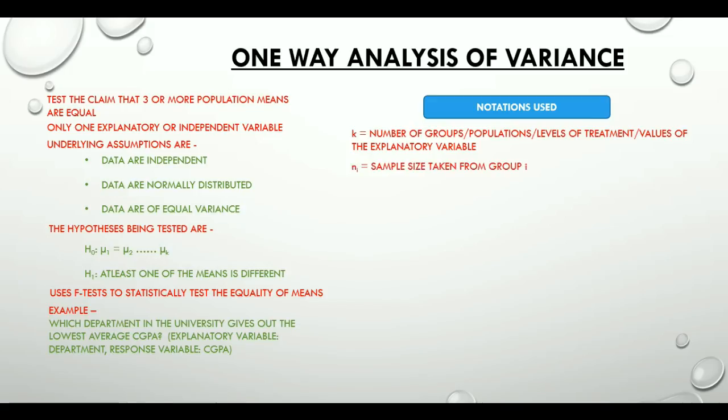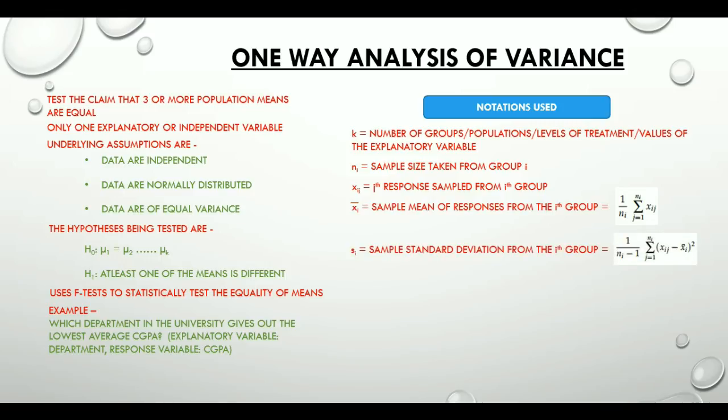NI is the sample size taken from the ith group. Xij is the jth response sampled from ith group. Xibar is the sample mean of responses from the ith group.